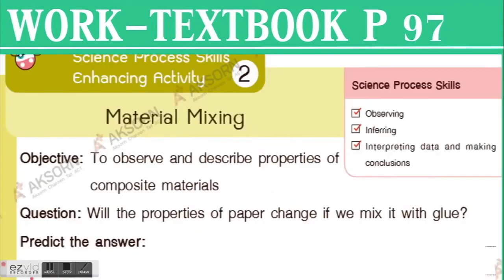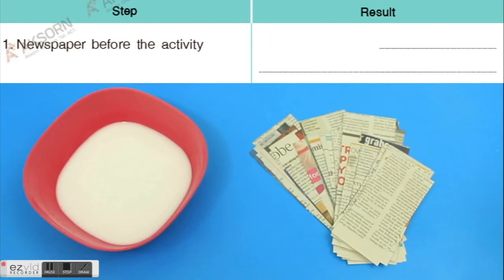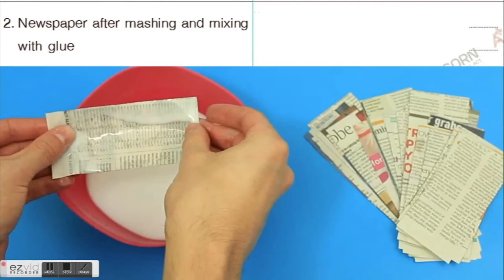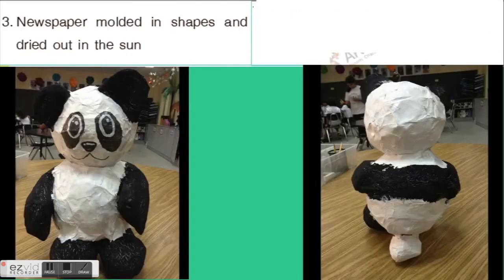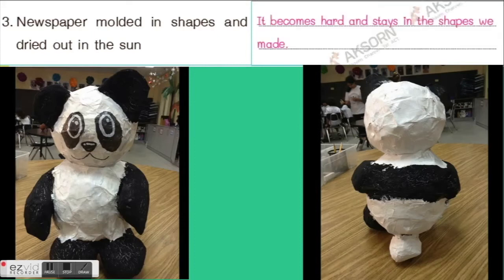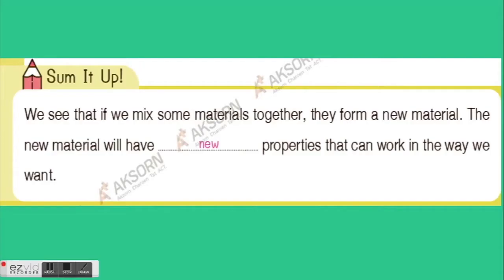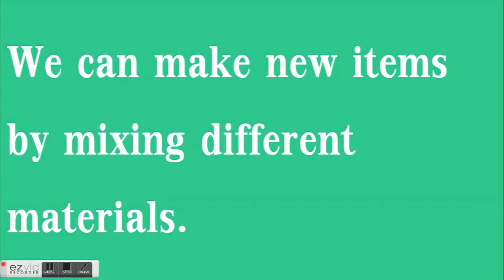We also did an experiment with newspaper and glue. We soaked the newspaper before the glue — the result was thin and fluttery. Then we applied glue — in other words, we made paper mache. After applying glue, we made a doll — a panda doll. The newspaper molded into a shape and dried out in the sun, becoming hard and staying in the shape we made.